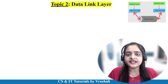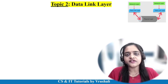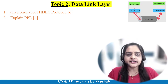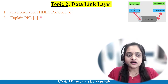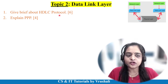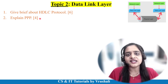The next unit is data link layer. Here, 90% of questions are theoretical and 10% are numericals. Generally, one question is asked from either a brief explanation of HDLC protocol or an explanation of PPP protocol. You should explain both protocols with at least 7 to 8 valid points.